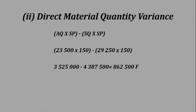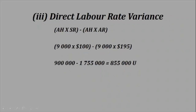Part two: the direct material quantity variance. The formula is AQ × SP minus SQ × SP. The standard price is common to both, so you factor it out and wind up with SP × (AQ − SQ). When you work this out, you get a favorable variance of 862,500. We know it's favorable because when we look at the actual versus standard, the actual quantity is less than the standard.